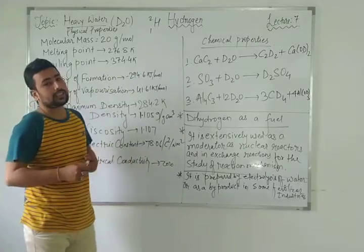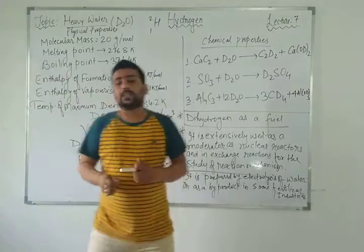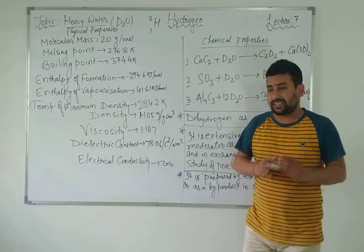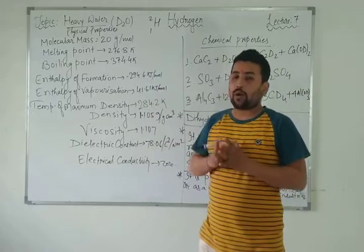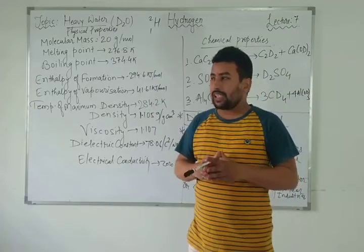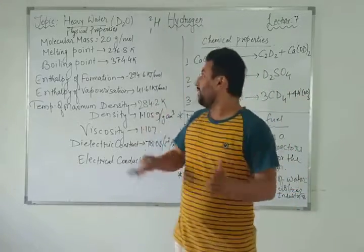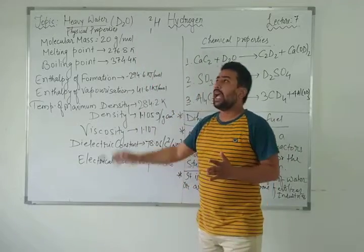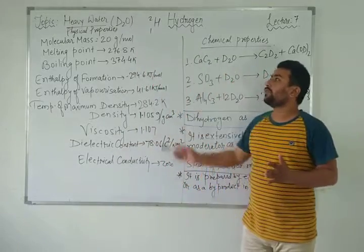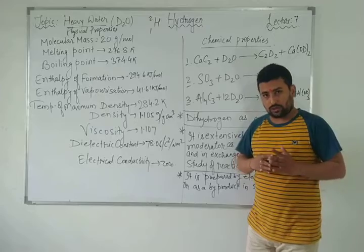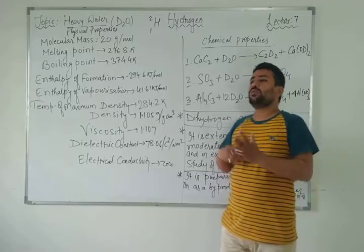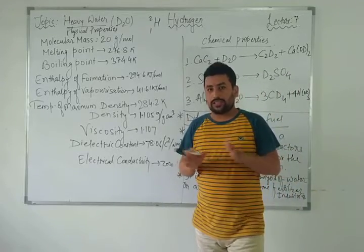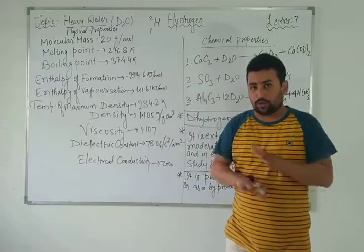Viscosity of deuterium oxide is 1.107. The dielectric constant is 78.06 C²/m² and electrical conductivity is zero. These are the physical properties of heavy water. We can compare these physical properties with those of normal water. D₂O is generally known as heavy water.